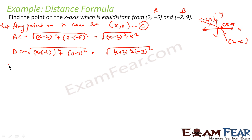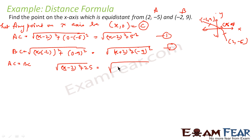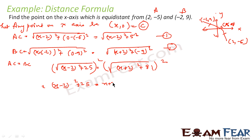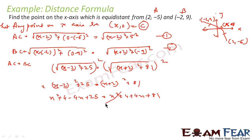The question says AC = BC. So √((x − 2)² + 25) = √((x + 2)² + 81). Squaring both sides: (x − 2)² + 25 = (x + 2)² + 81. Expanding: x² − 4x + 4 + 25 = x² + 4x + 4 + 81. The x² and 4 cancel on both sides.